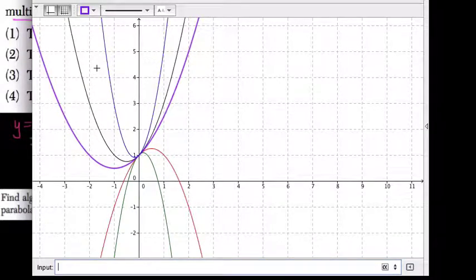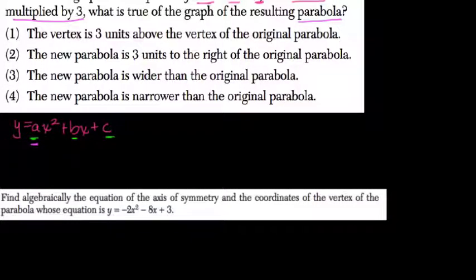So this purple parabola here is the widest of all because its rate of change is the slowest. So when you multiply a by a fraction amount, it becomes wider because the rate of change is slower. So here, then, the answer is a little bit easier because it's not going to be wider because we're increasing the rate of change. It's going to be narrower.